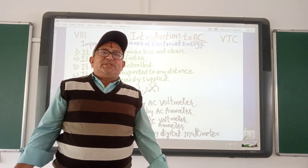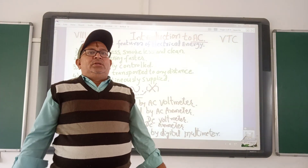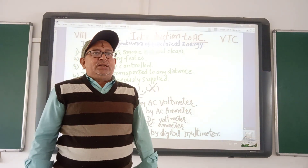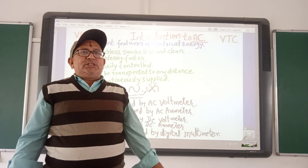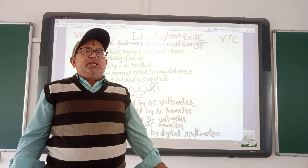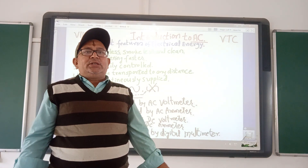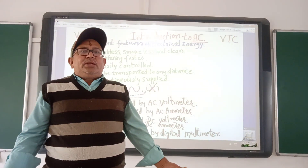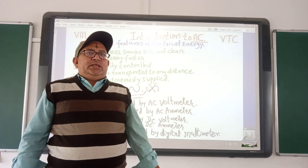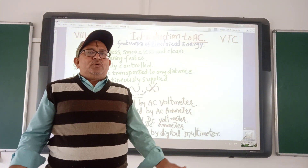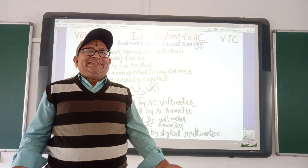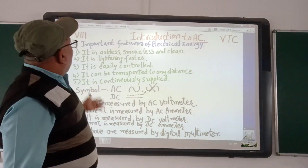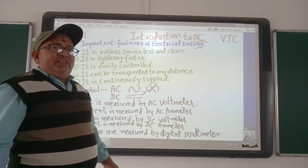Dear students, Namaste all. You are welcome to the community section of Monodoga Education Center. You are learning Electrical and Electronics Theory as well as Practical in the Operational Training Center. All of you will make use of Electrical Energy. We know we have two types of Electrical Energy: AC and DC. Today let us know the properties of AC.